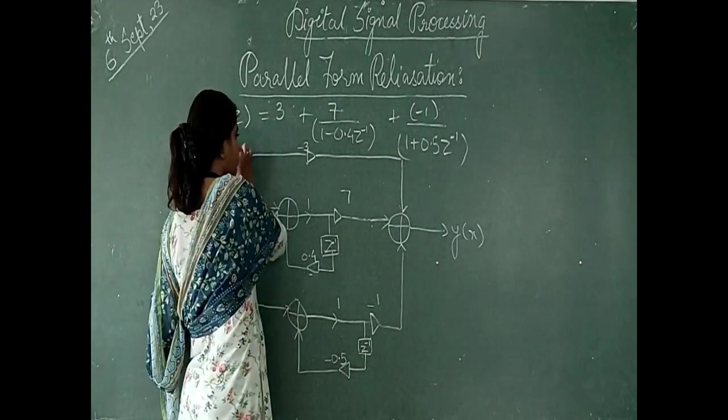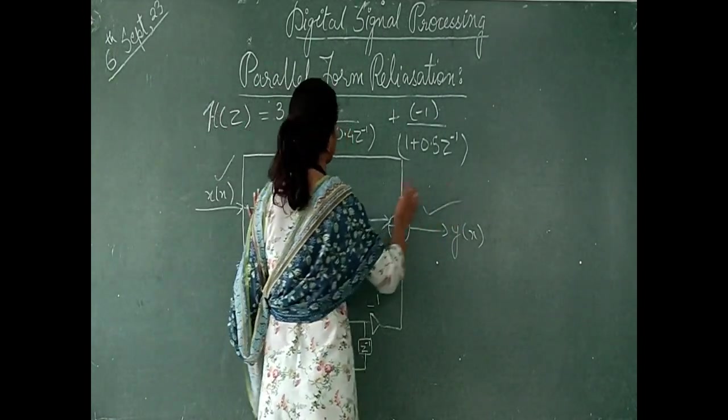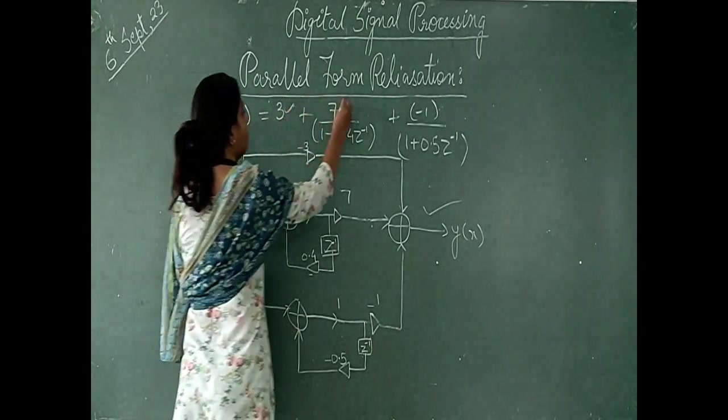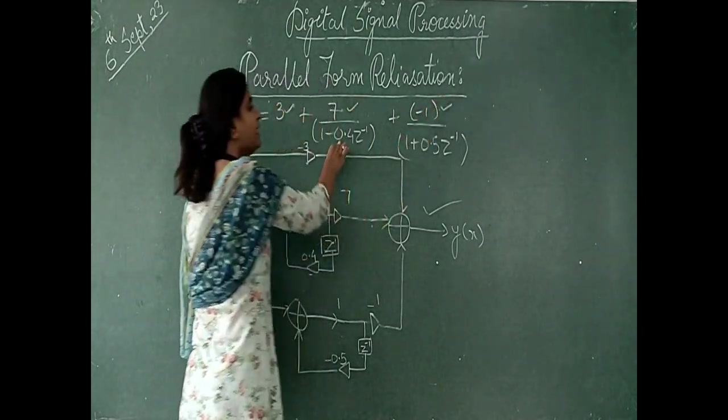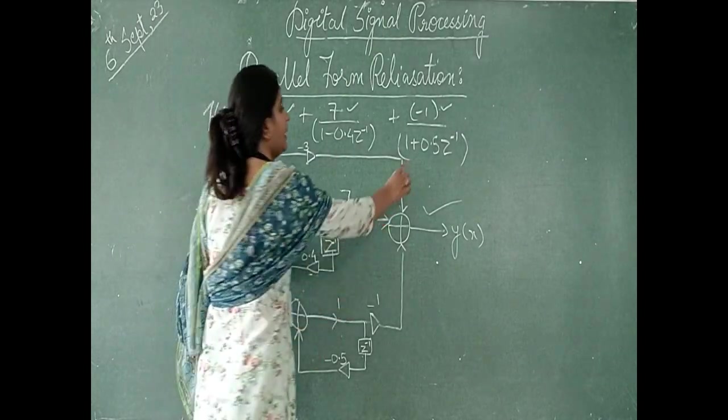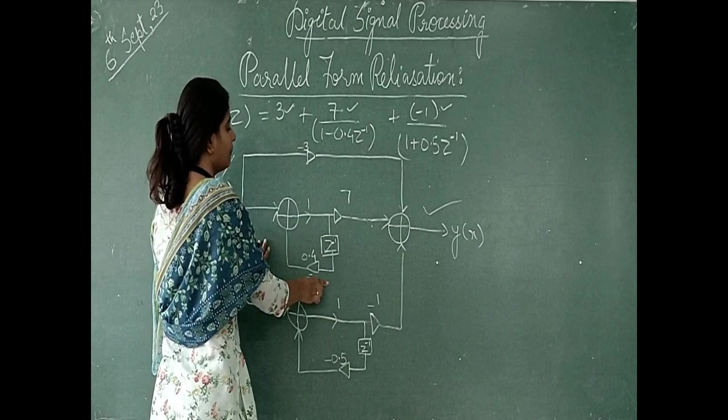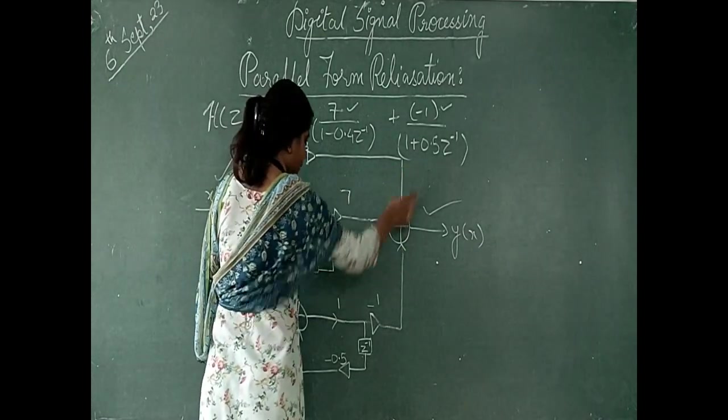Input, this is your output. Now what do you have to do? You have to do this, you have to do this, and you have to do this. So one delay element will be here and one delay element will be here. This delay element will be here, this delay element will be here.